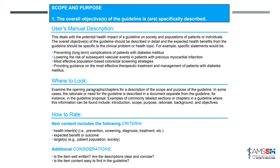Here's an example from the user manual for the first item. Within domain number one, which is scope and purpose, the first item is: 'The overall objective of the guideline is specifically described.' The user manual provides more information about what this means — it deals with the potential health impact of a guideline on society and populations of patients. The overall objective should be described in detail, and expected health benefits should be specific to the clinical problem or health topic. The manual also gives a hint of where to look within the guideline — for this item, examine the opening paragraphs or chapters for a description of the scope and purpose.